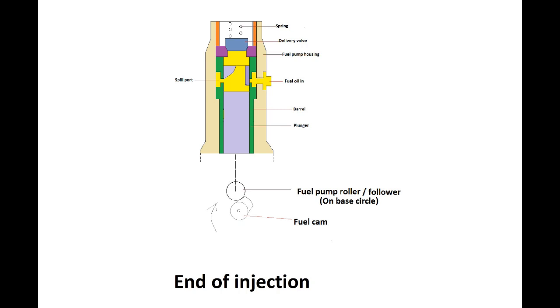Then as the follower descends back to base circle, the plunger moves back down the barrel under the force of the return spring. A vacuum is generated above the plunger which aids refilling when the edge of the plunger once more uncovers the suction spill ports.